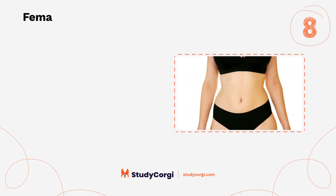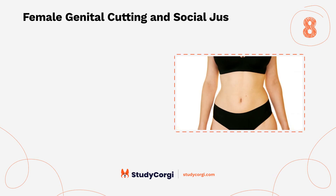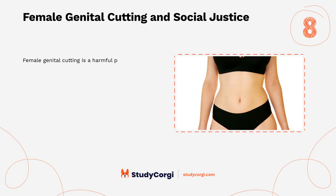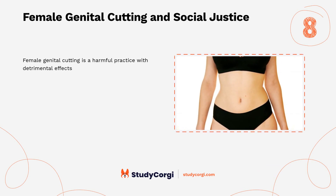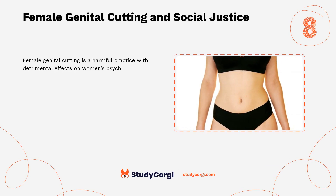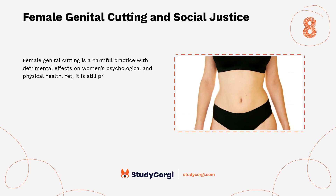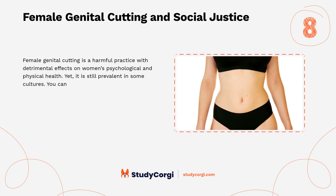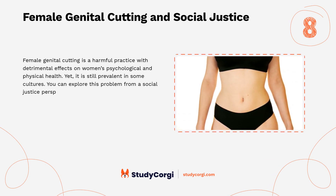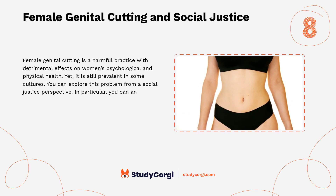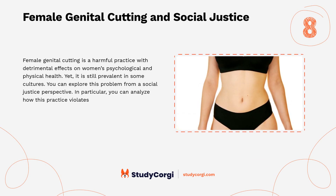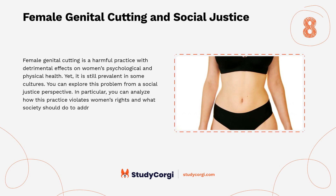Female genital cutting and social justice. Female genital cutting is a harmful practice with detrimental effects on women's psychological and physical health, yet it is still prevalent in some cultures. You can explore this problem from a social justice perspective. In particular, you can analyze how this practice violates women's rights and what society should do to address this problem.